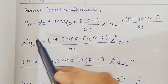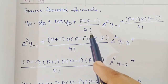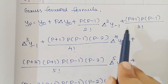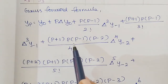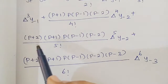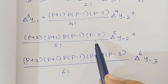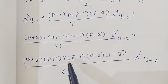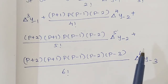The Gauss Forward formula is: yₚ = y₀ + p·δy₀ + [p(p−1)/2!]·δ²y₋₁ + [(p+1)p(p−1)/3!]·δ³y₋₁ + [(p+1)p(p−1)(p−2)/4!]·δ⁴y₋₂ + [(p+2)(p+1)p(p−1)(p−2)/5!]·δ⁵y₋₂ + [(p+2)(p+1)p(p−1)(p−2)(p−3)/6!]·δ⁶y₋₃. Note: Gauss Forward starts at (p−1) and Gauss Backward starts at (p+1).